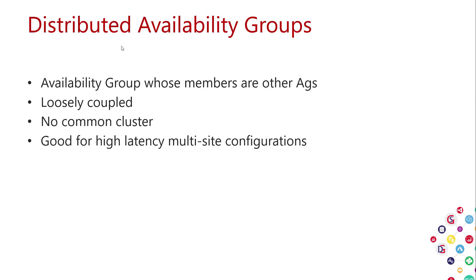Distributed availability groups are a different kind — they're availability groups whose members are themselves availability groups, making them a loosely coupled group. All databases within each member availability group are part of the distributed AG, so they need to have the same databases. There's no common cluster infrastructure, and that's one of the key facets that makes distributed AGs useful — they're good for high-latency multi-site configurations.